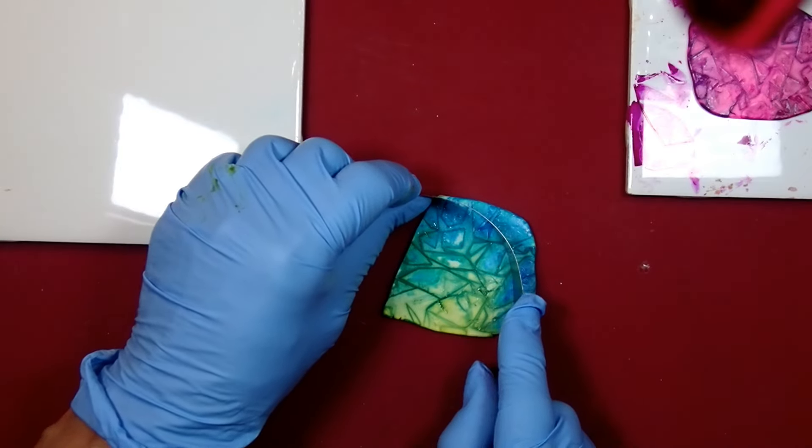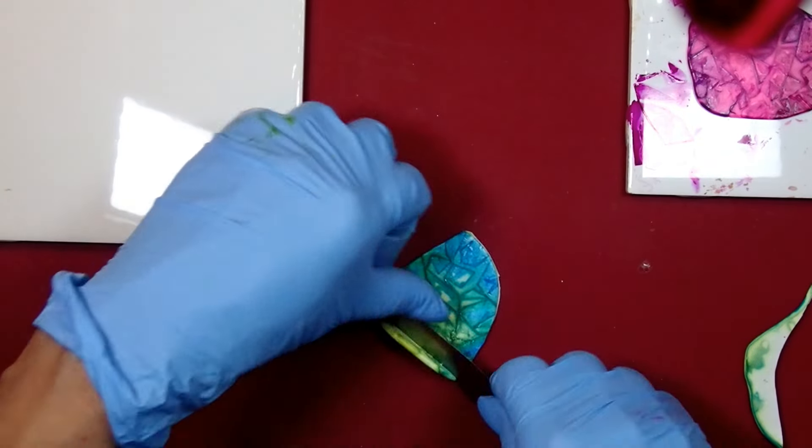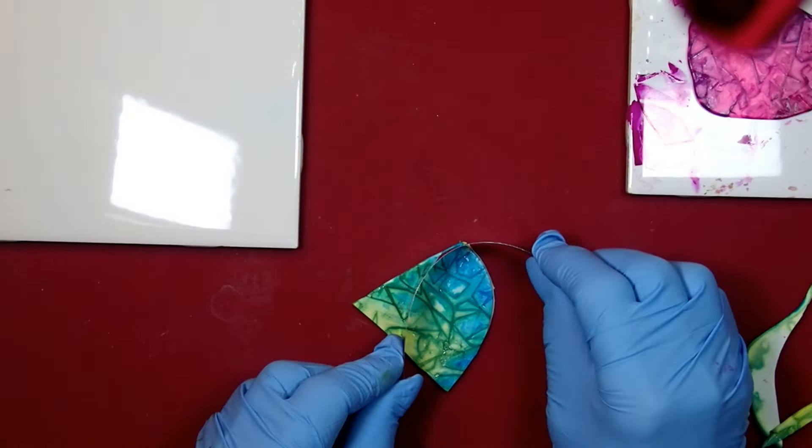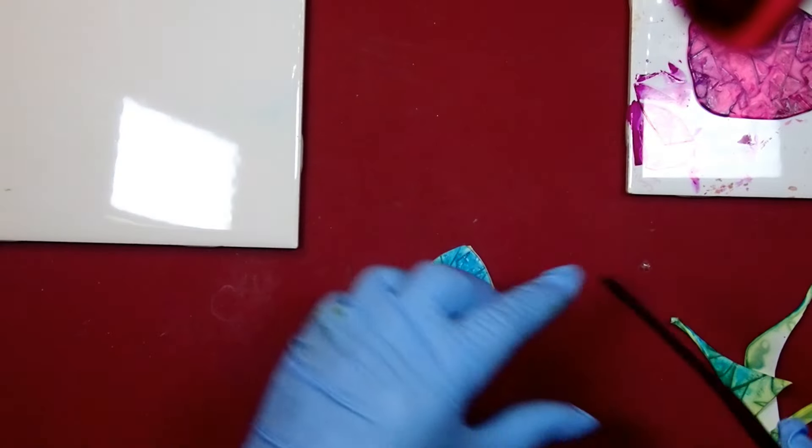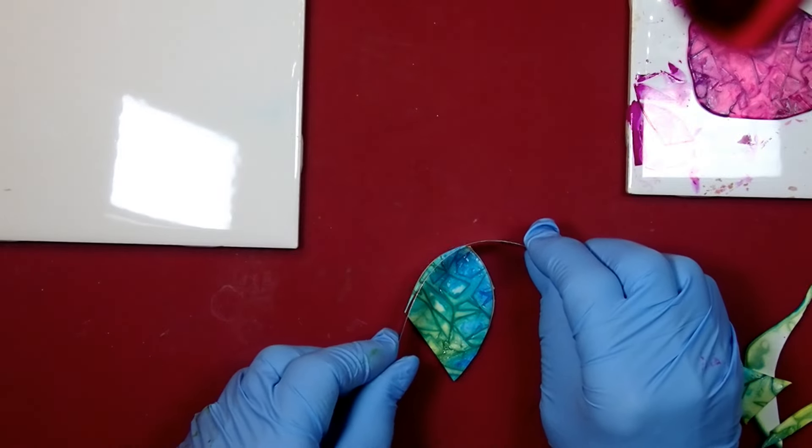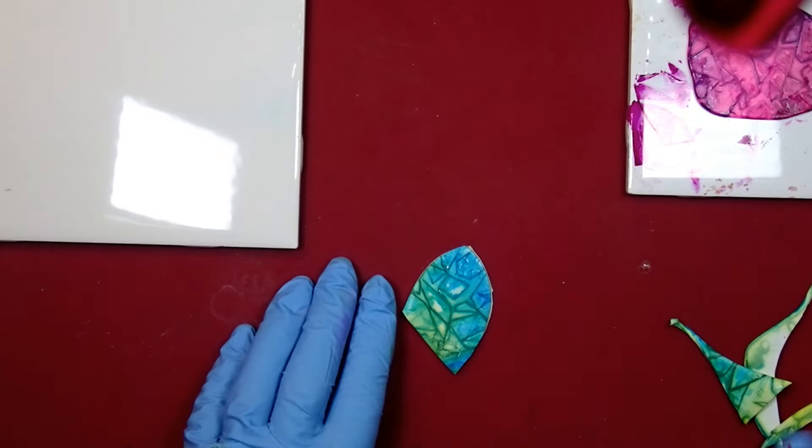And now the only thing that is left is to shape it, cut it and shape it. You can see that I'm having a bit of a hard time cutting it because actually the alcohol ink kind of transformed the clay. It feels a little bit different, if you know what I mean.